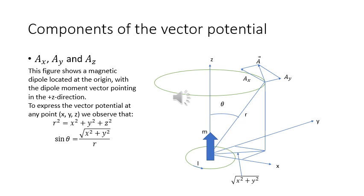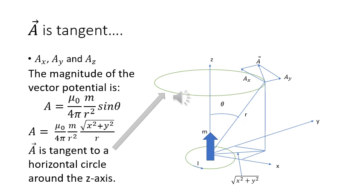Let's consider the components of the vector potential. This figure shows a magnetic dipole at the origin with the dipole moment vector pointing in the positive z-direction. To express the vector potential at any point, r² = x² + y² + z², and sin θ = √(x² + y²) / r. The magnitude is A = μ₀m sin θ / (4π r²), which equals μ₀m/(4π) · √(x² + y²) / r³. A is tangent to a horizontal circle around the z-axis as indicated in the figure.